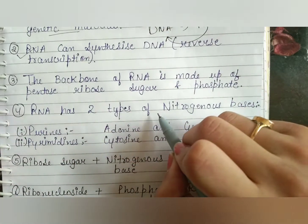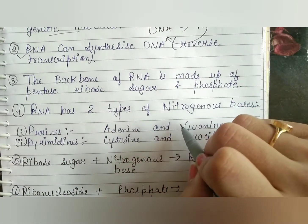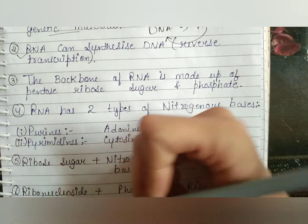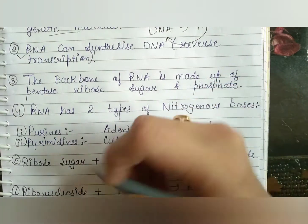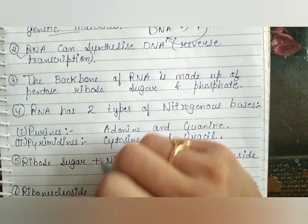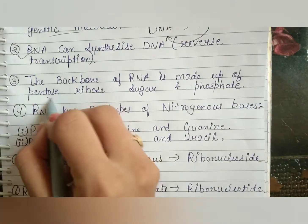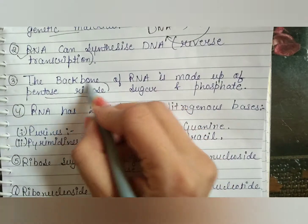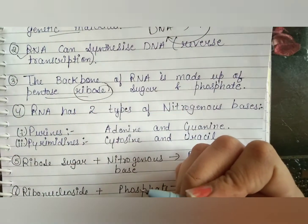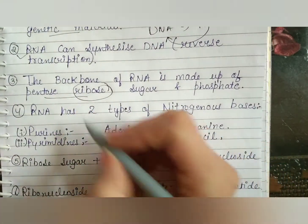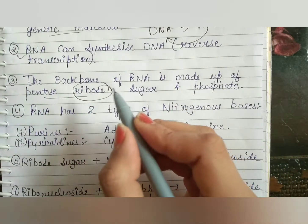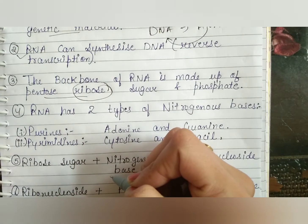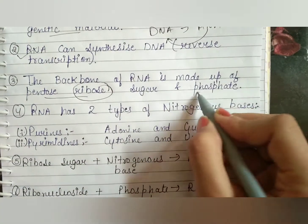The backbone of RNA is made up of pentose ribose sugar and phosphate. RNA is made up of a pentose sugar which is ribose, whereas DNA is made up of deoxyribose. RNA is made up of ribose sugar and a phosphate group.